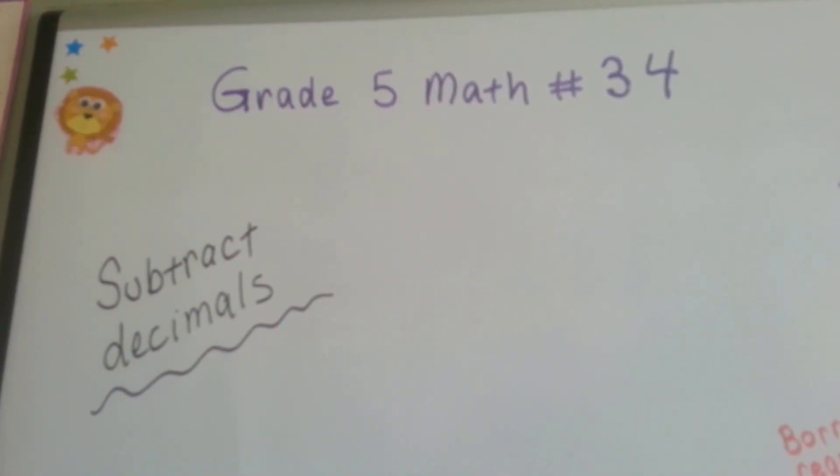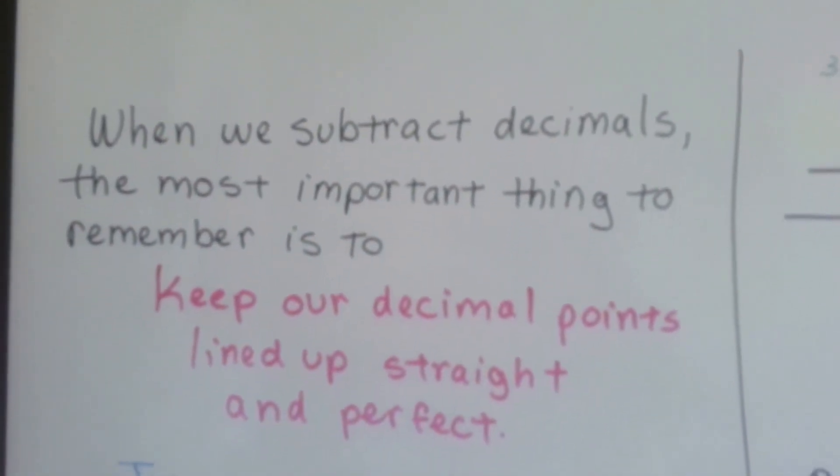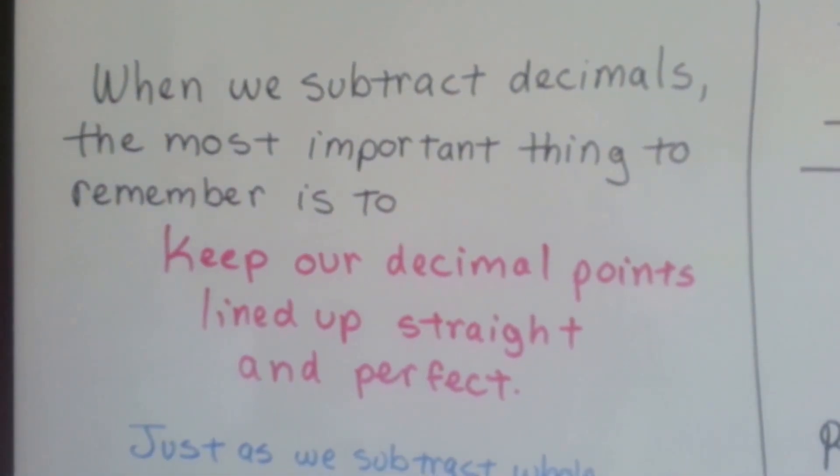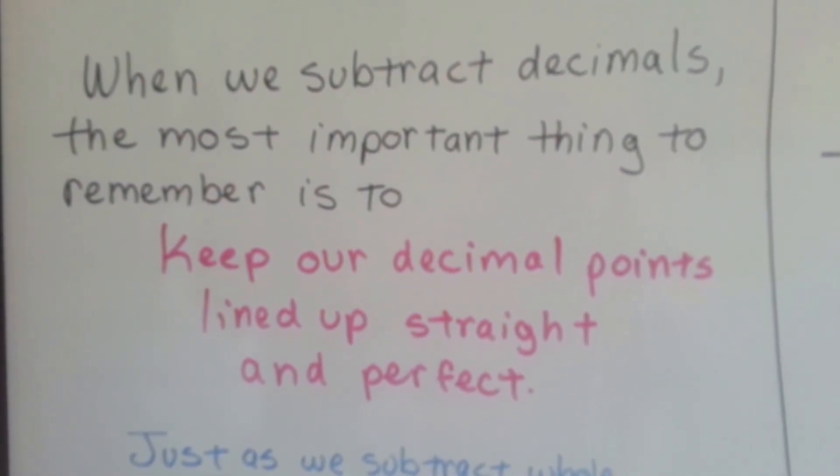Grade 5 math number 34, subtract decimals. When we subtract decimals, the most important thing to remember is to keep our decimal points lined up, straight, and perfect.